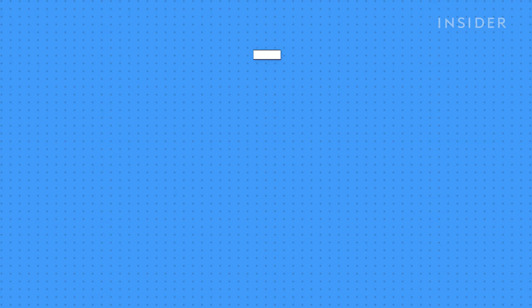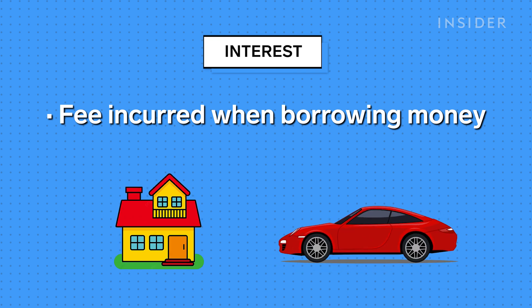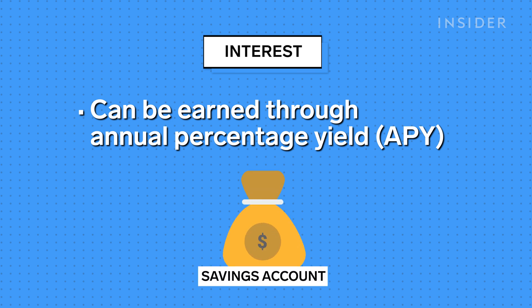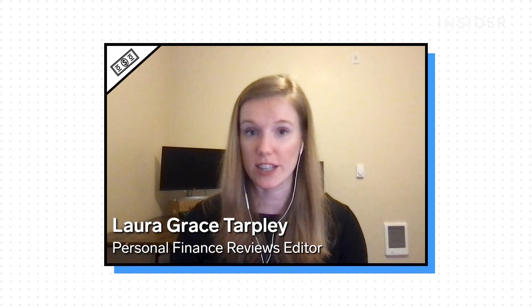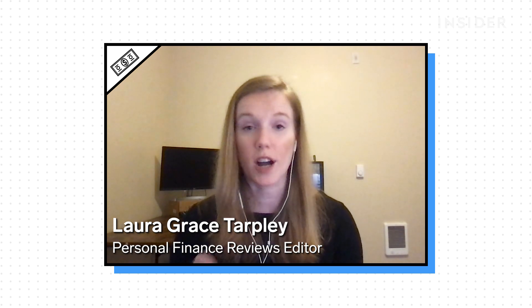To understand compound interest, first we have to understand what interest is. Interest is a fee that you incur when you borrow money through something like a mortgage or an auto loan. You can also earn interest in the form of an annual percentage yield, or APY, when you open a savings account. Interest is typically expressed as a percentage, and it can be calculated either as simple interest or compound interest.